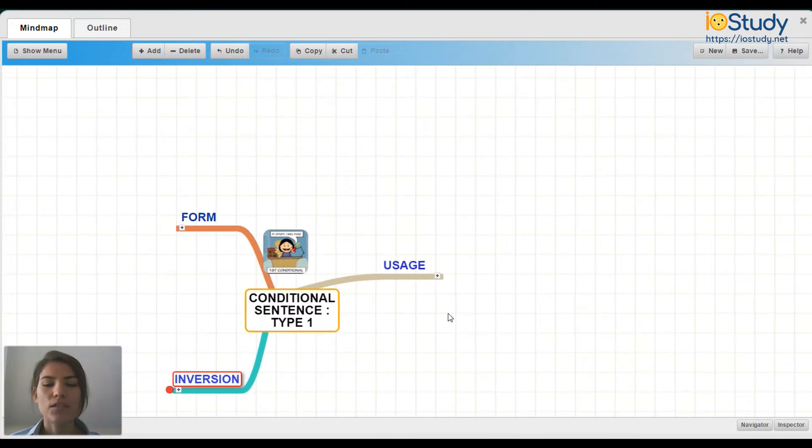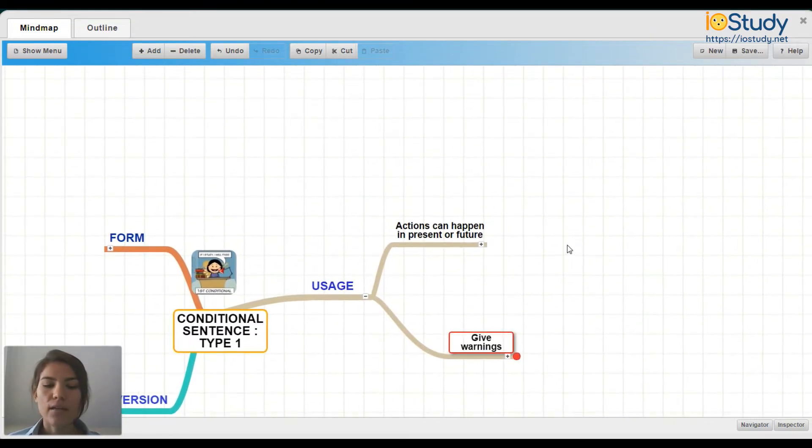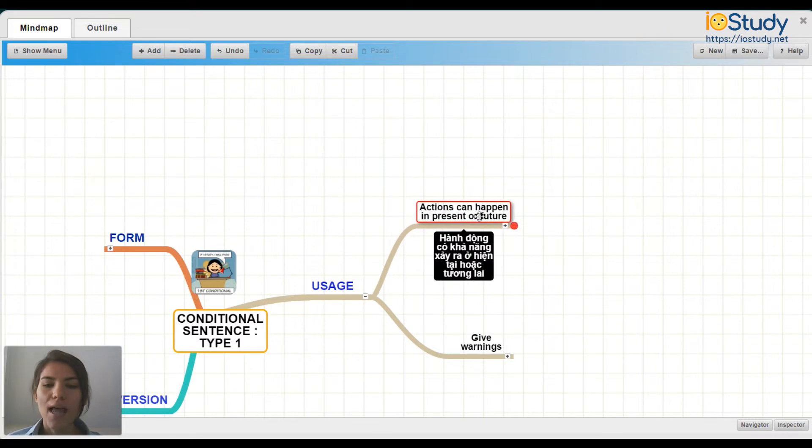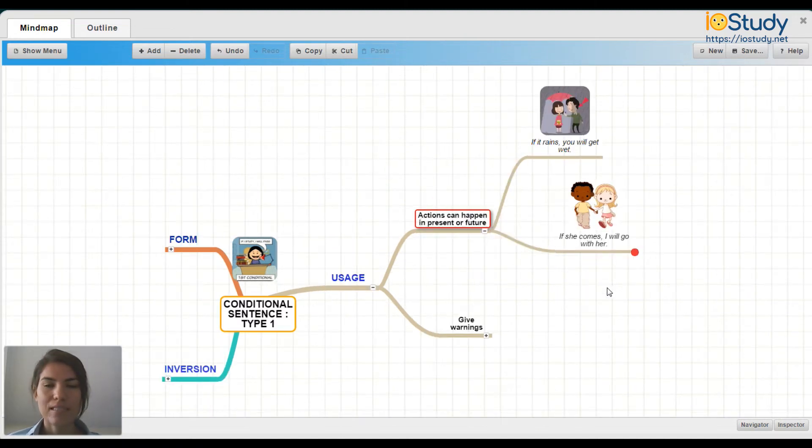Let's first talk about usage. So let's expand the mind map. We can use the conditional in actions in the present or the future tense. So let's expand and see some examples.